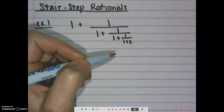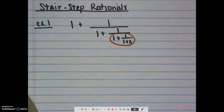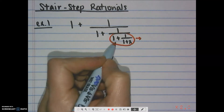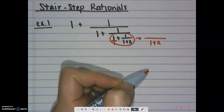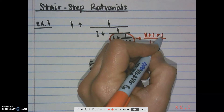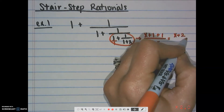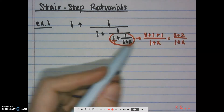We have 1 divided by 1 plus x — that's fine to leave as is. Now we'll deal with the next piece up. I strongly suggest circling and keeping track of which piece you're working on. We need a common denominator between 1 and 1/(1+x), which is 1 plus x. The first fraction is missing that, so multiplying gives us (x+2) over (1+x).